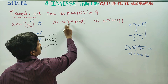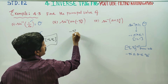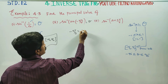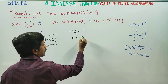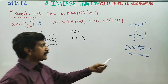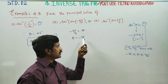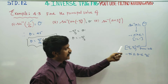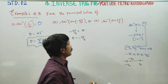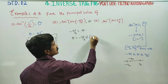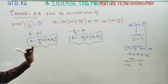Sin inverse and sin neutralize and cancel. The expression gives minus 5 by 6. Theta is equal to minus 5 by 3 — check this answer. This belongs to minus 90, plus 90. That's why the answer is equal to the principal value.